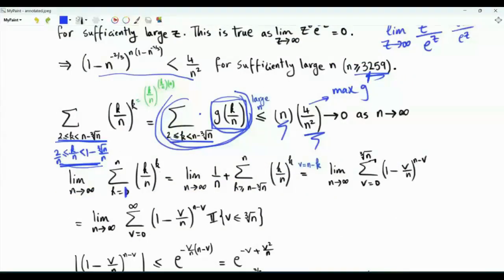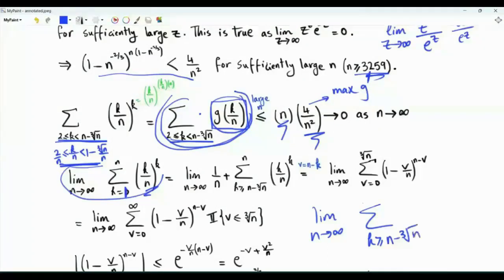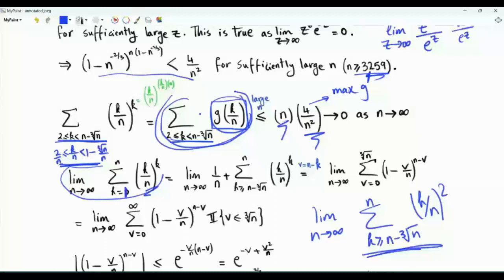Therefore, the limit of the full sum equals the limit of the sum from k = n - n^(1/3) to n. The purpose of the first part was to show that we only need to account for the terms near k = n; the earlier terms are negligible. The relevant summation index range is k between n - n^(1/3) and n.